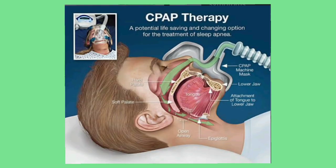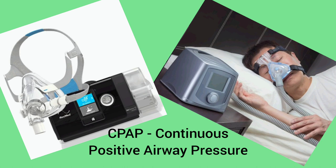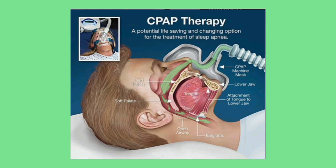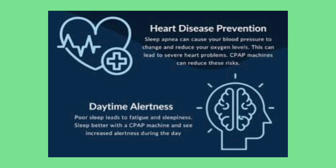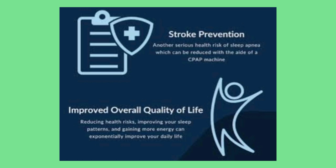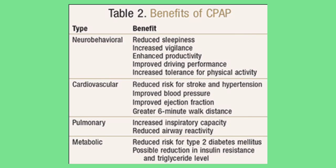Treatments include wearing a specialized machine such as CPAP, BiPAP, and APAP. We will be discussing CPAP today because it is the most common machine that people wear. CPAP, or Continuous Positive Airway Pressure, is a machine that uses mild air pressure to keep breathing airways open while sleeping. Some important benefits of CPAP are: it improves sleep quality, it lowers the risk of heart attack and stroke, it reduces daytime sleepiness, and it may stop snoring.